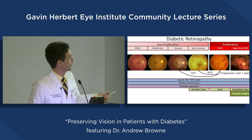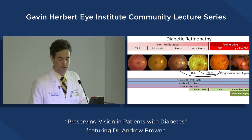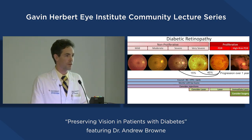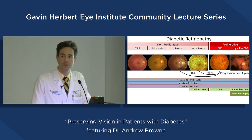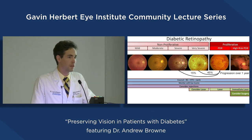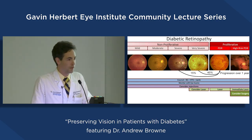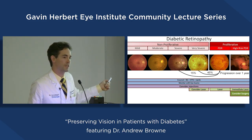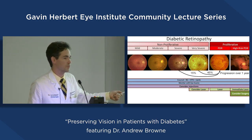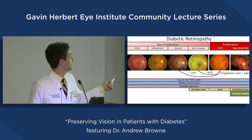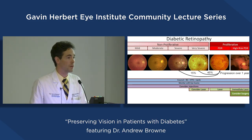Fifteen percent of people with severe non-proliferative retinopathy can go to proliferative within one year. Management starts with counseling on controlling blood sugar and blood pressure — both equally important. People with any form of diabetic retinopathy should have regular eye exams. Lower stage means less frequent exams; higher stage means more frequent follow-up. Severe or very severe cases are seen every three months; mild cases every nine months; proliferative disease patients are seen monthly until controlled.